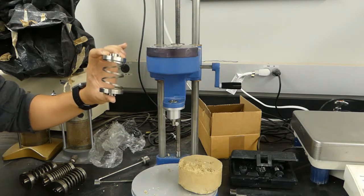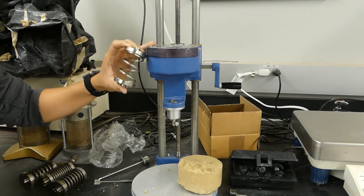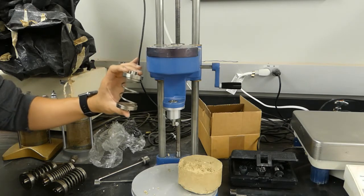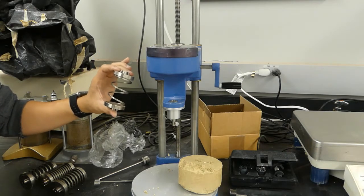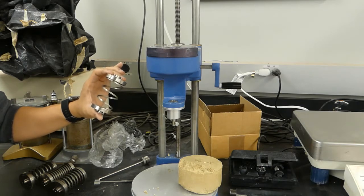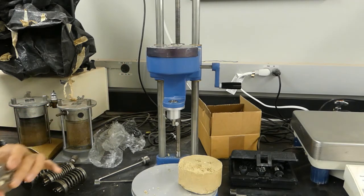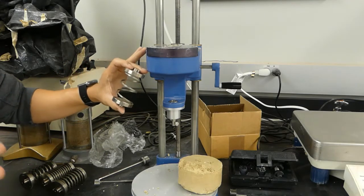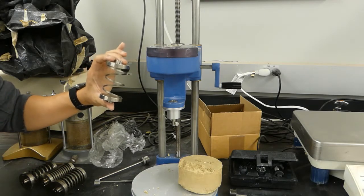So this is, we have, depending on the stiffness of the soil that you expect, you can change the spring. So the spring is kind of correlated with the stiffness of the soils. So if you have a relatively weak soil, so you want to have, you want to use a spring that has a smaller stiffness.